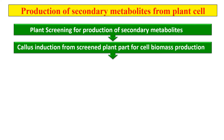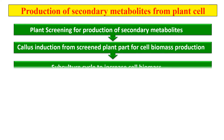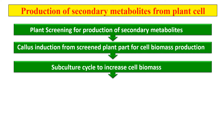The next step is callus induction. Once the plant has been chosen which is making the secondary metabolites, we proceed for callus culture. We take an explant from that particular plant and perform callus culture. By this callus culture we get the cell biomass. Next is subculture to increase the cell biomass — once we induce the callus, we perform subculturing regularly to increase the number of cells so that we can get the maximum amount of secondary metabolites.